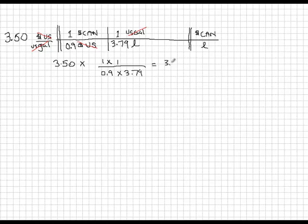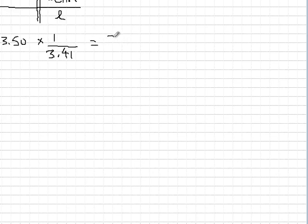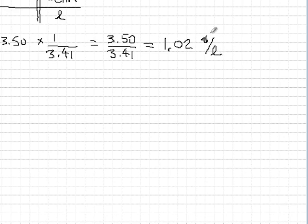And so that is 3.50 times, if I was to calculate that out, that would be 3.41. Which of course is the same as saying 3.50 divided by 3.41. And now the answer we've all been waiting for. 3.50 U.S. is equivalent to a dollar and two cents dollars per liter and dollars Canadian. Yeah, that's pretty much the answer.